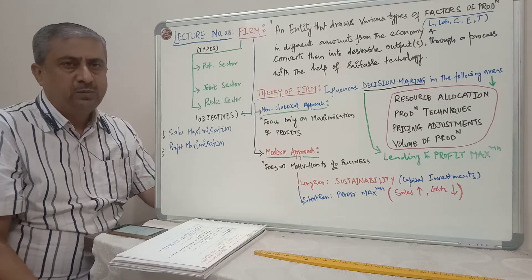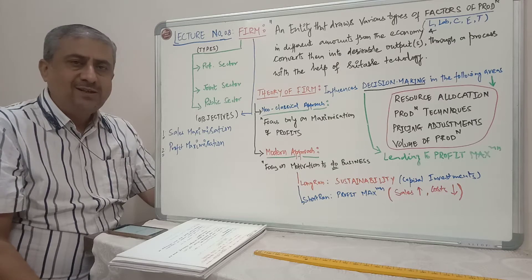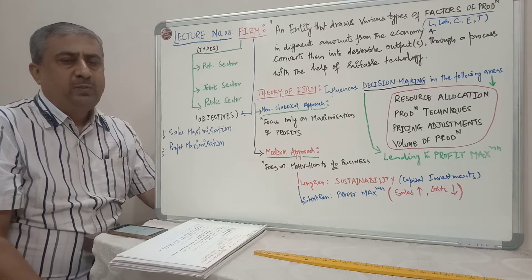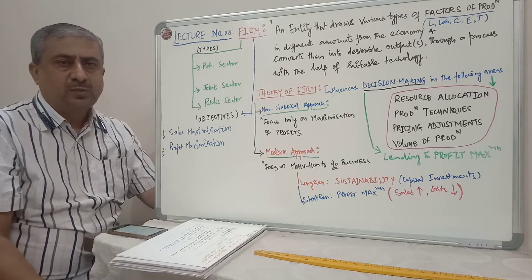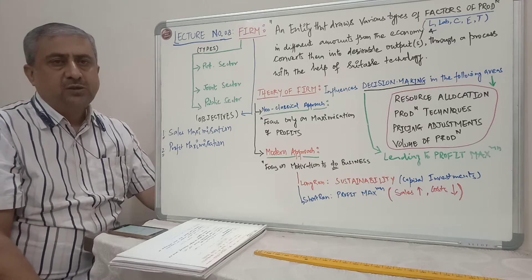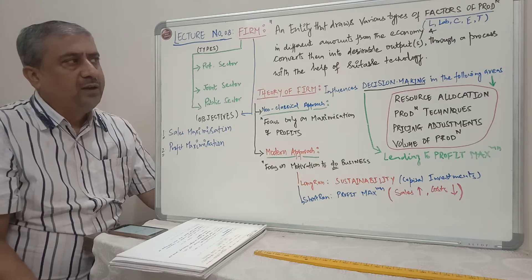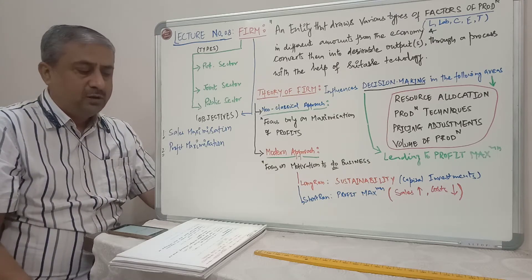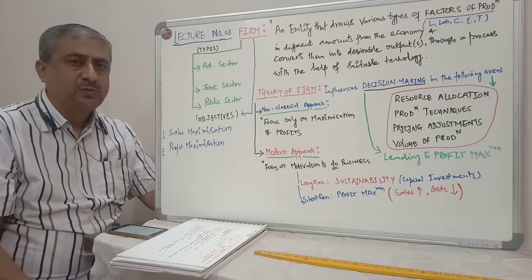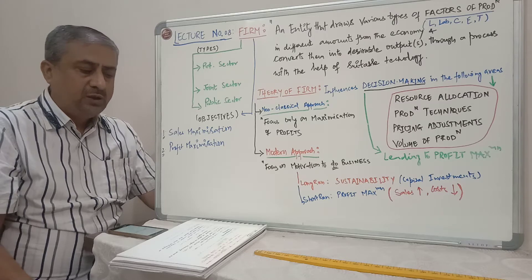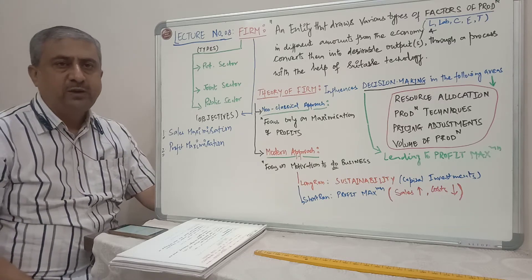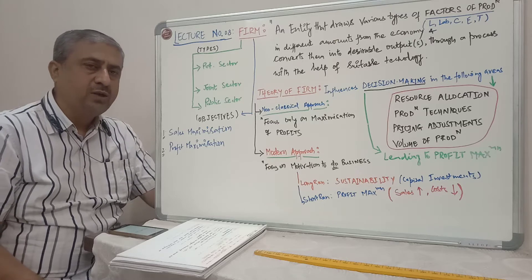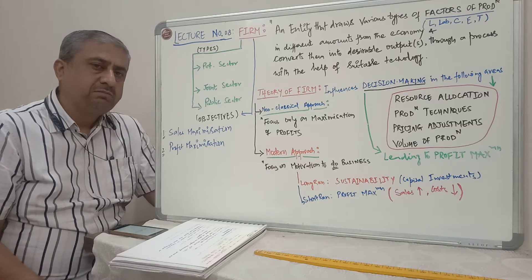Today we will be talking primarily about what is a firm. It's an entity that draws various types of factors of production. As you may be aware from your graduation studies, the factors of production are land, labour, capital, enterprise, technology, and so on — drawn in different amounts from the economy. Some industries might be capital intensive, some might require more labour compared to other sectors.